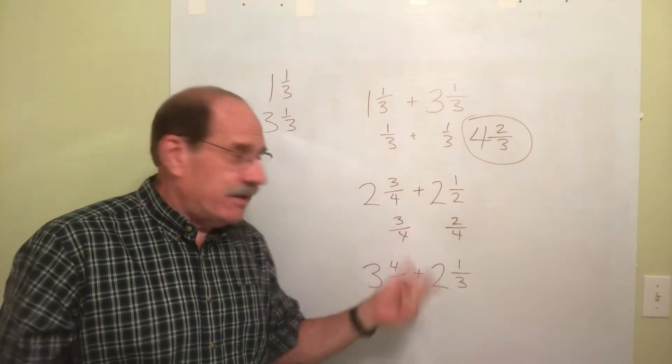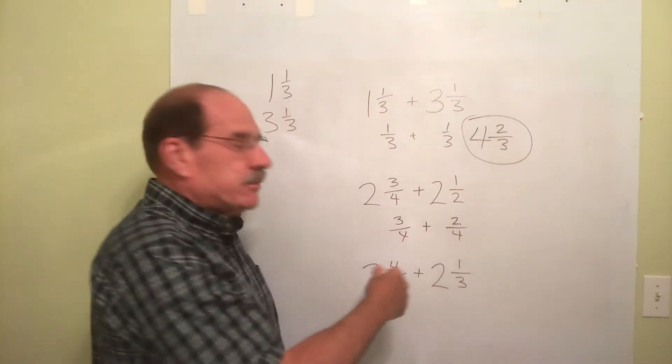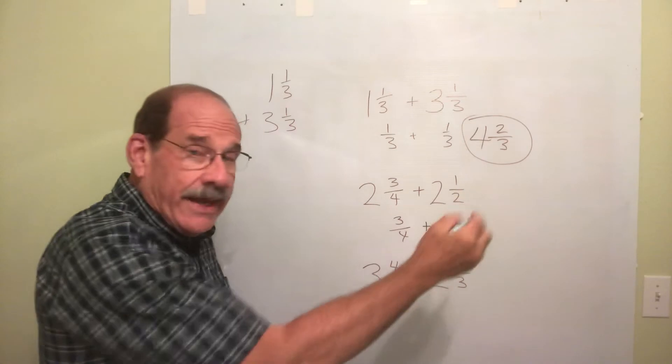Now that we have the common denominator, 3 fourths plus 2 fourths, well, 3 plus 2, that's 5.